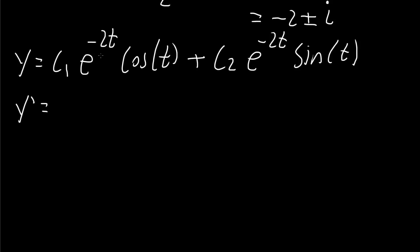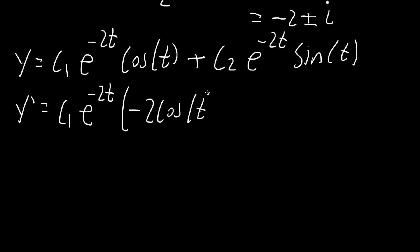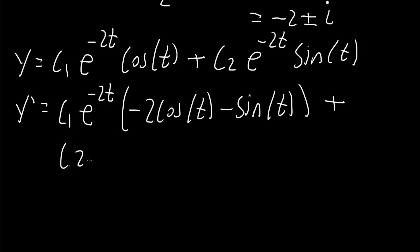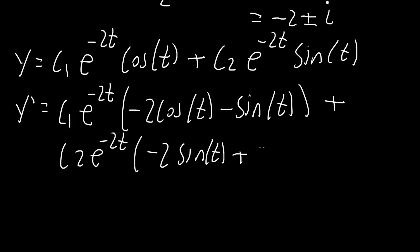y prime equals c1 e raised to negative 2t times (negative 2 cosine t minus sine t) plus c2 e raised to negative 2t times (negative 2 sine t plus cosine t).